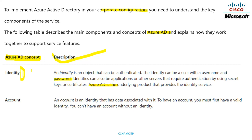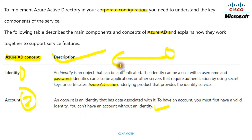The next concept is Account. An account is an identity that has data associated with it. There is no big difference between account and identity — if there is an identity, there will be an account with data associated with it. To have an account you must first have a valid identity, because the account needs a username and password, which comes from the identity.